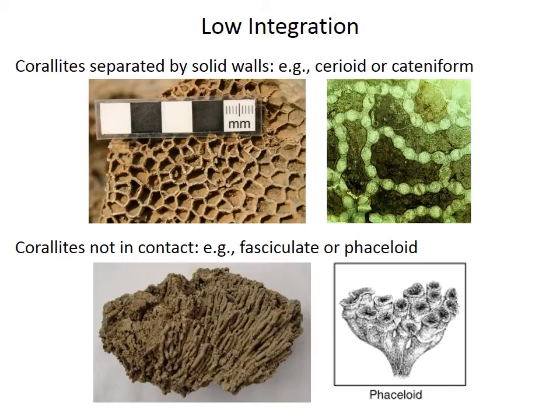which are primarily or almost only found in tabulates. Some corallites are not even in contact at all, as in the example of the fasciculate or fascioid corals, where they're sort of pseudo-solitary — living in a colony but in their own individual tubes, not connected or communicating with any of the other corals.